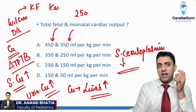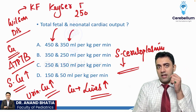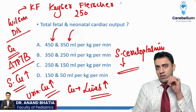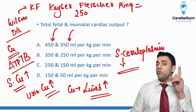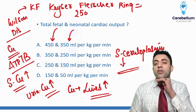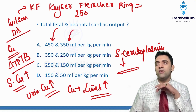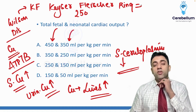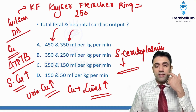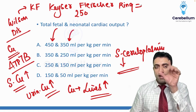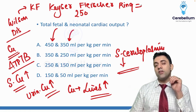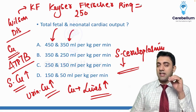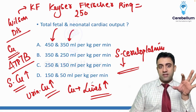What is KF ring? Kayser-Fleischer ring — seen in the Descemet membrane of the cornea on slit lamp examination. The slit lamp is the instrument where you place your chin and focus your eyes to examine structures, and that is where we actually see the KF ring.